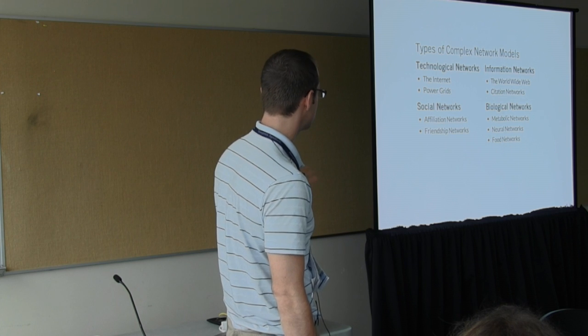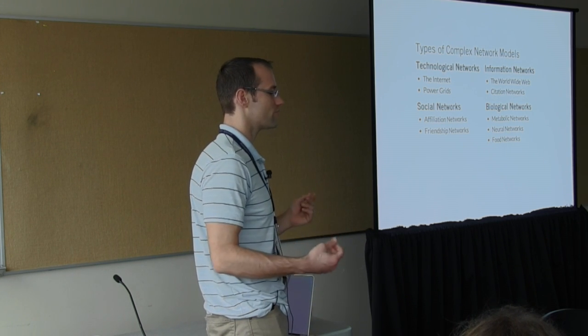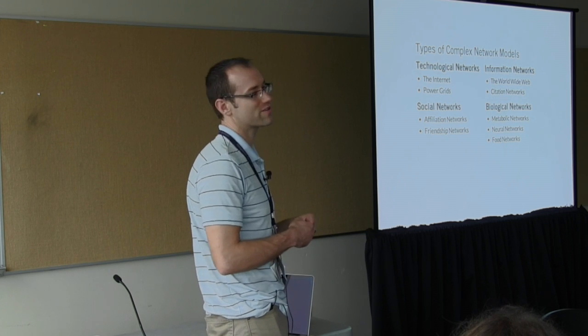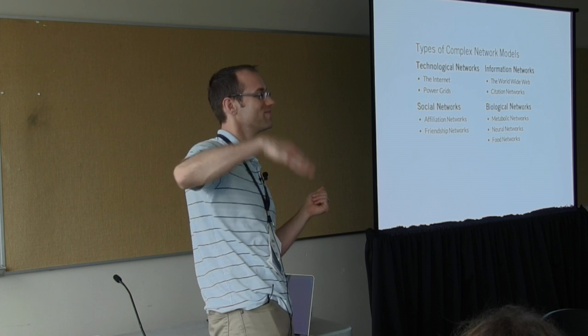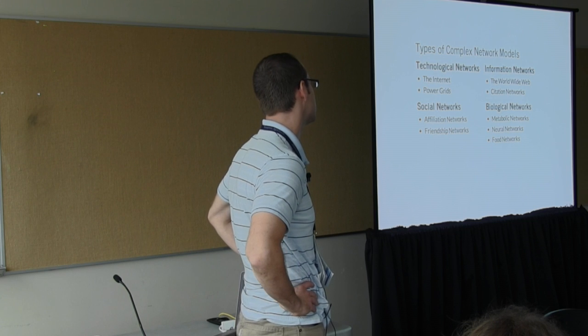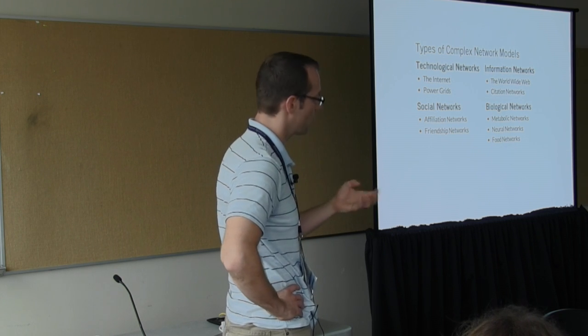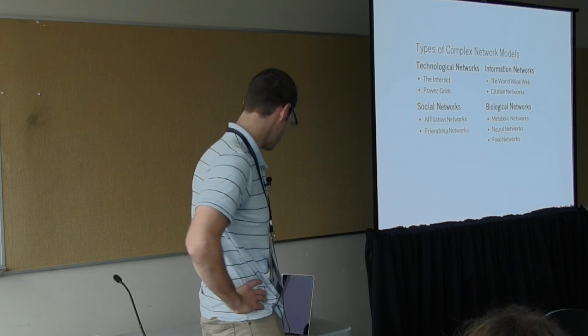Information networks, which include things like citation networks, which obviously scholars are particularly interested in since they're interested in their rank when it comes to publication and reference. Biological networks, everything from metabolic networks to predation networks and even neural networks.